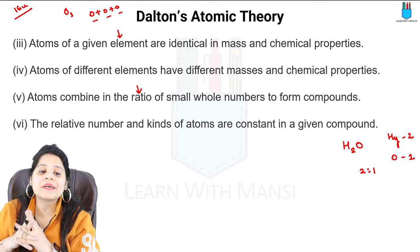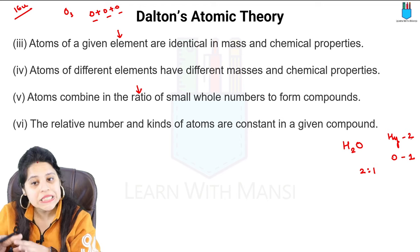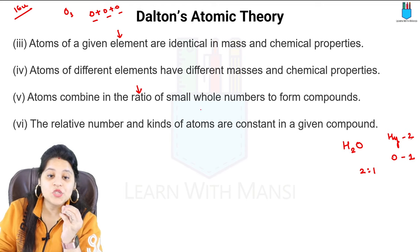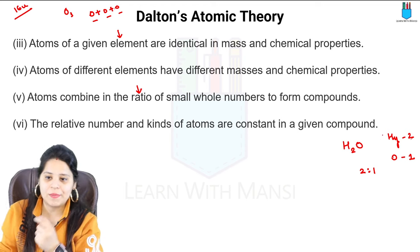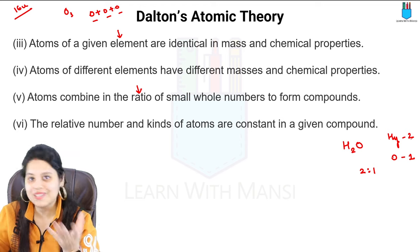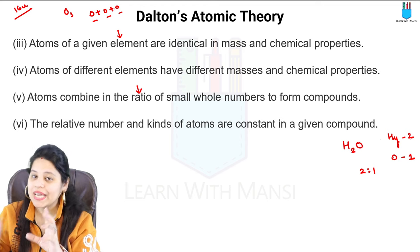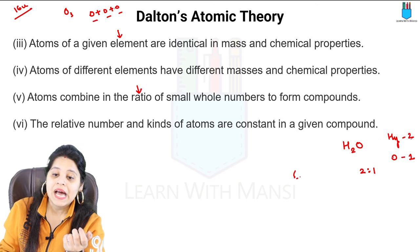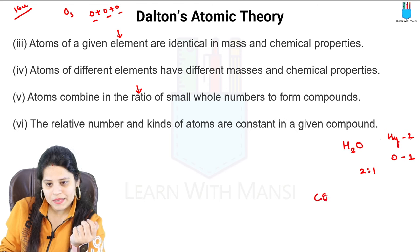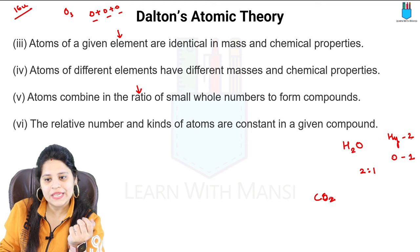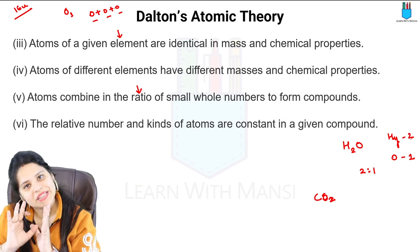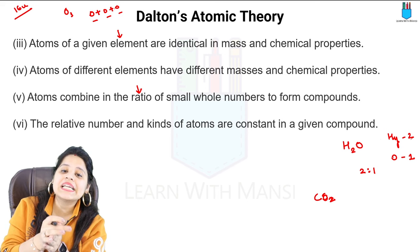Next and last: the relative number and kind of atoms are constant in a given compound. For H2O, the atoms' kind and relative number will always be the same — hydrogen 2 and oxygen 1. Oxygen 2 and hydrogen 1 would not be H2O. Similarly for CO2: carbon 1 and oxygen 2 will always be the same. Carbon 2 or oxygen 1 would not be CO2. This is Dalton's Atomic Theory.